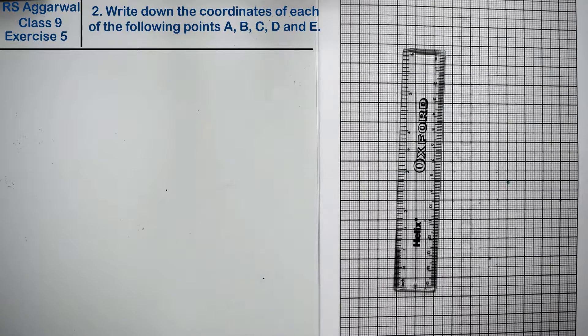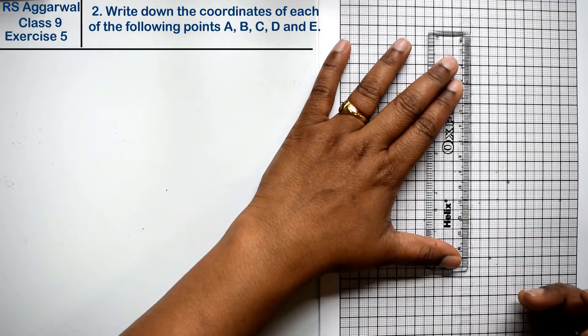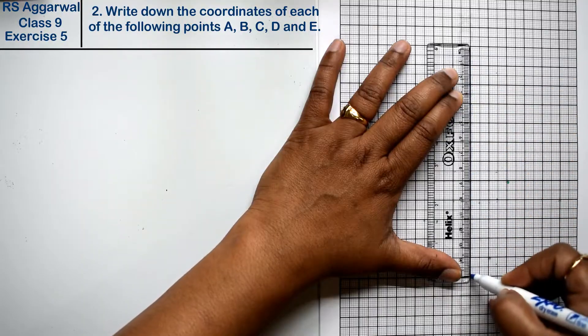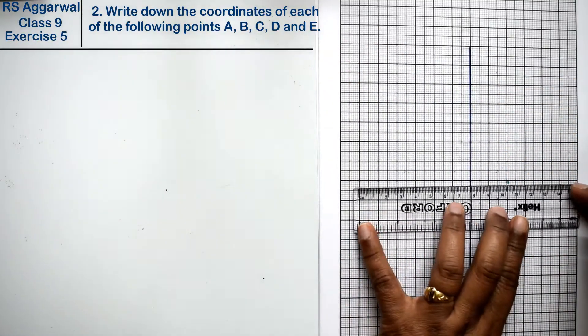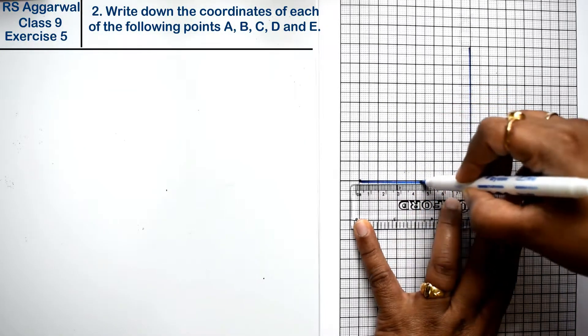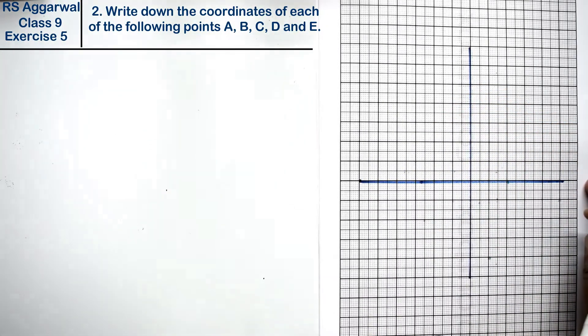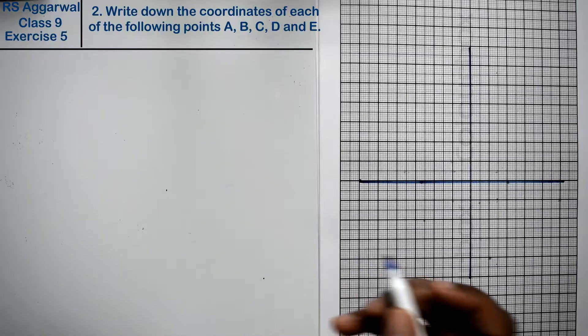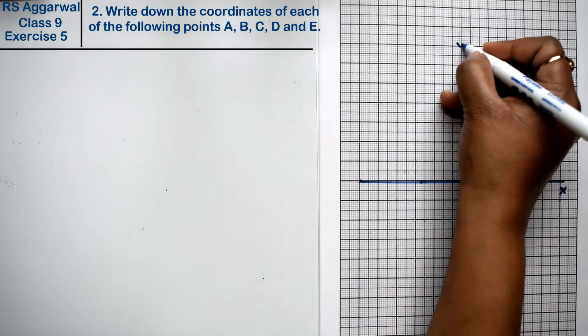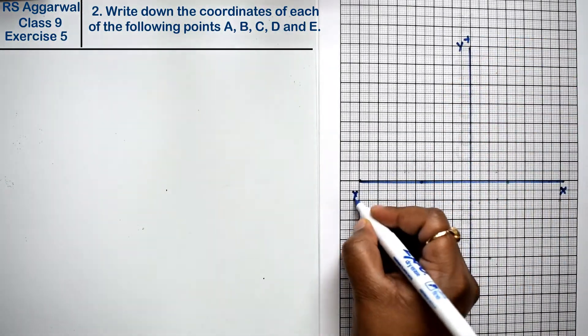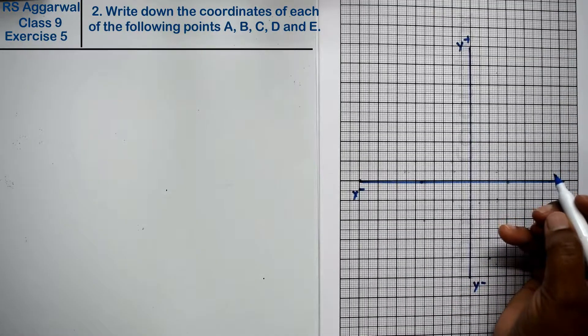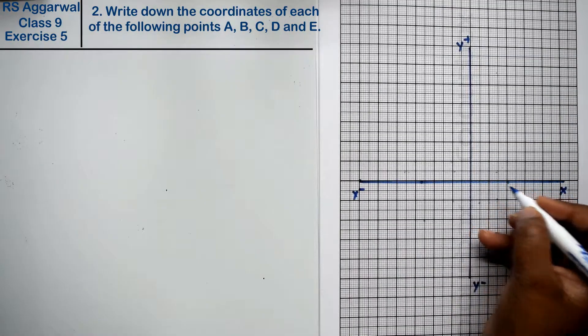First I have a graph paper that I have made. Now X is this, Y plus, X negative, and Y negative right rings.